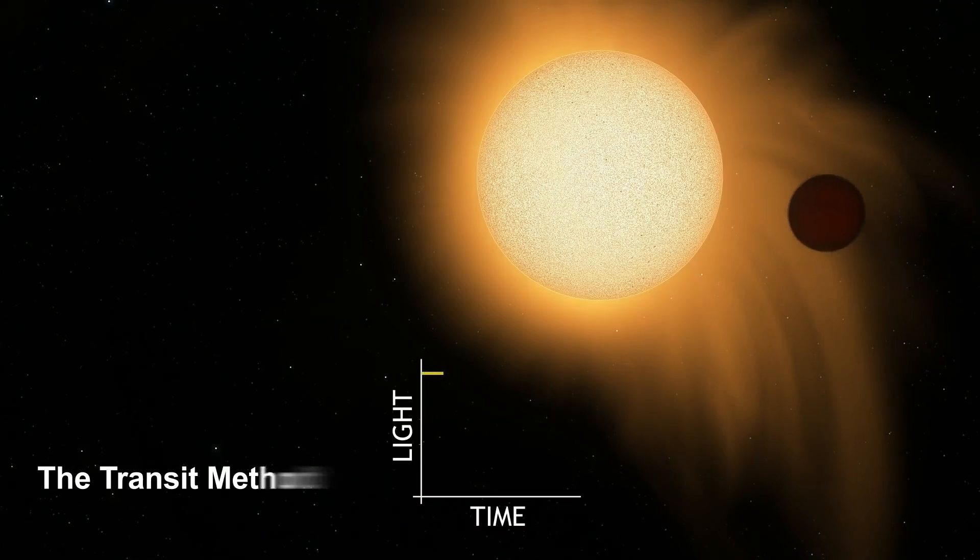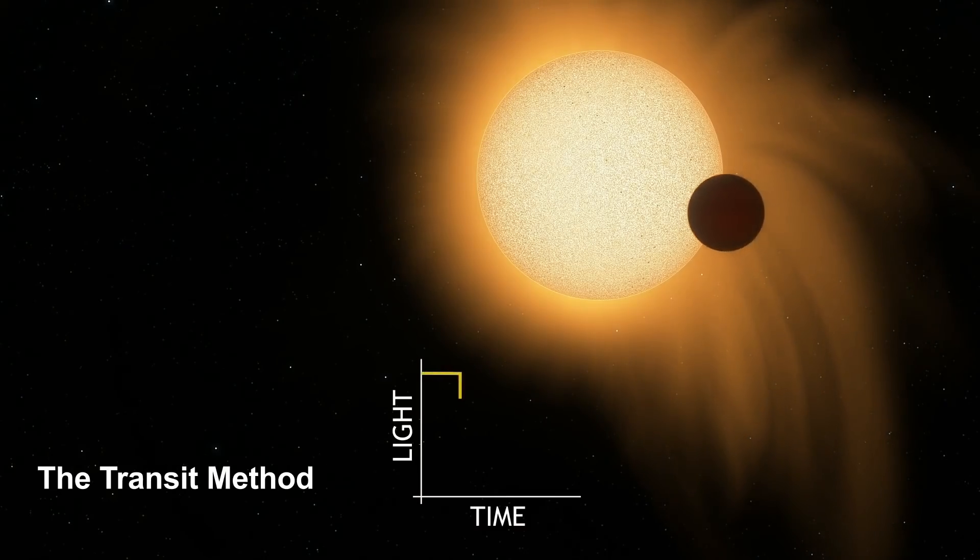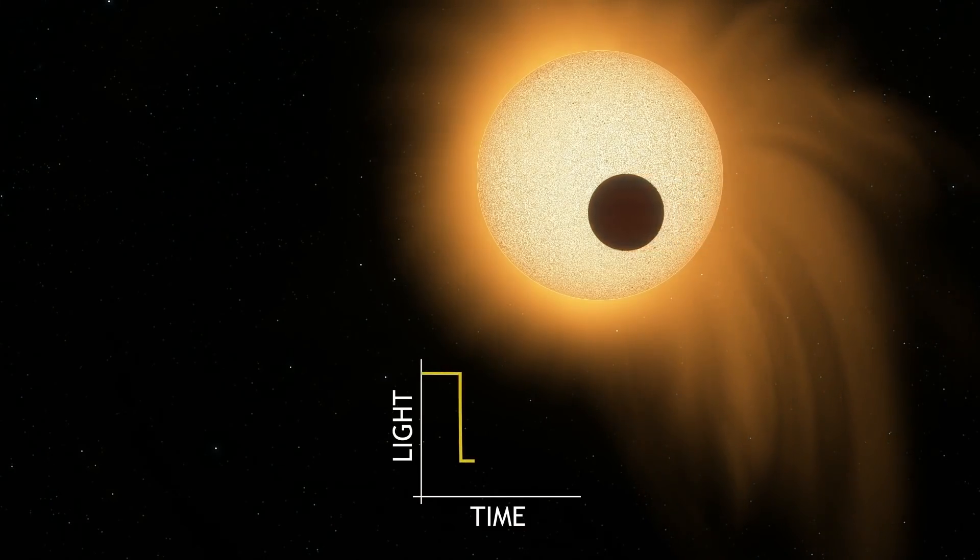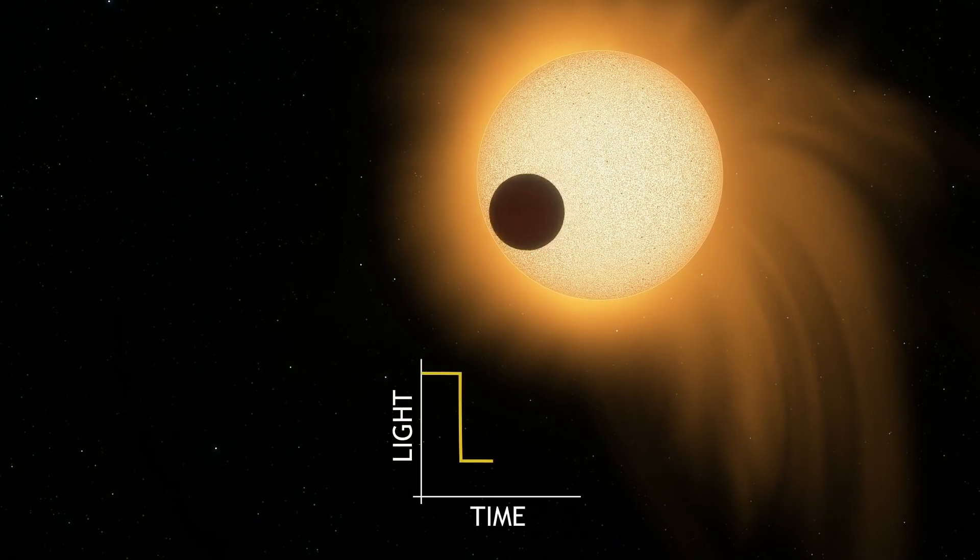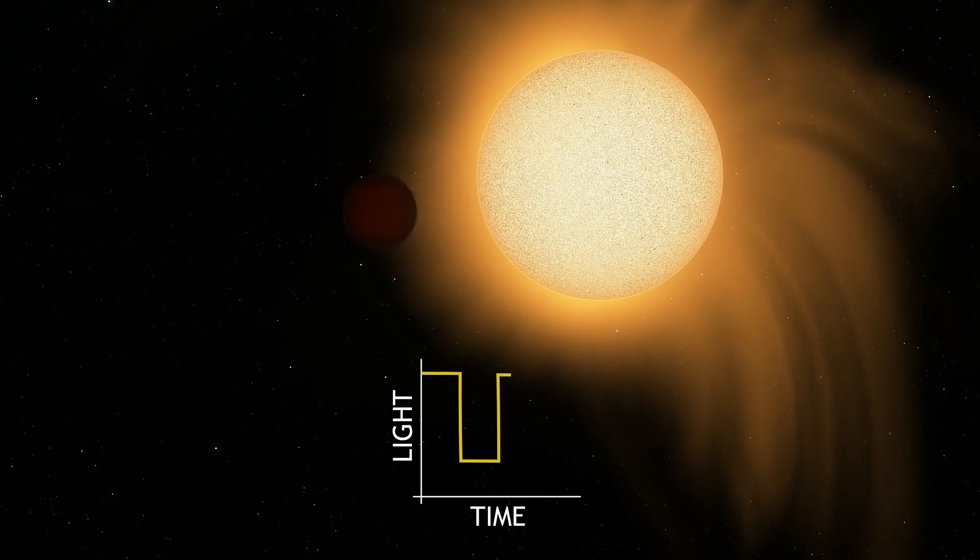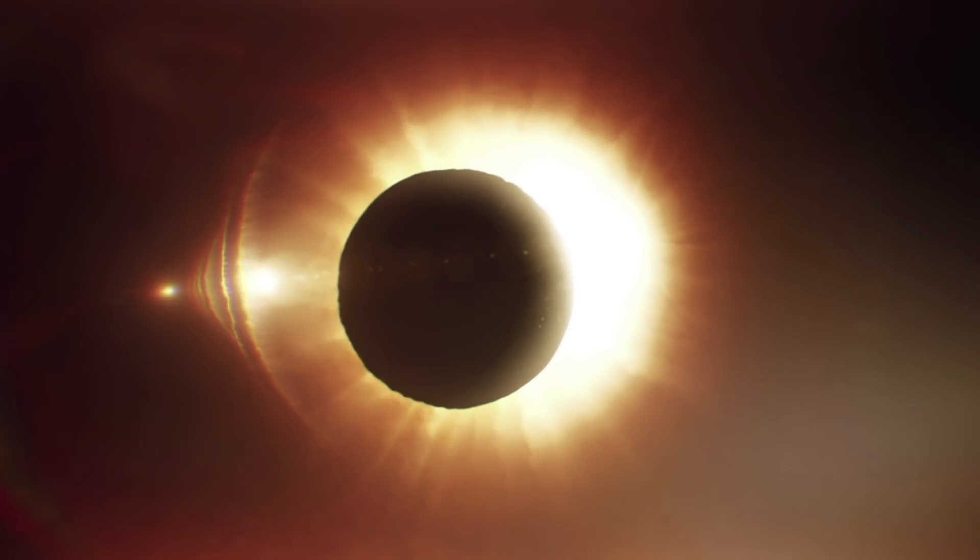However, the transit method has proven to be the most robust so far. It is used for detecting and studying the properties of a planet via the dip in the brightness of its host star as the planet passes between it and us.